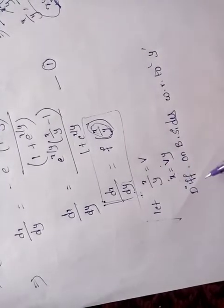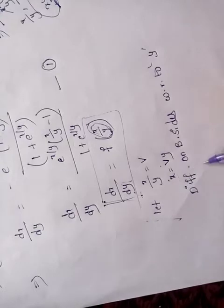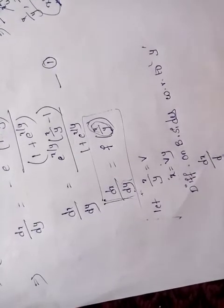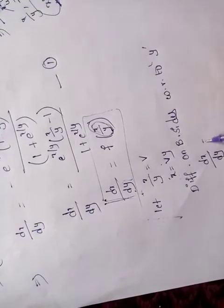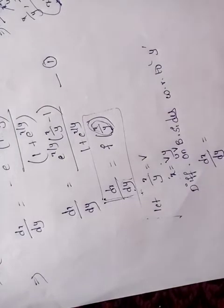Applying the uv product rule: d/dy of (vy) gives dx/dy = v + y(dv/dy).